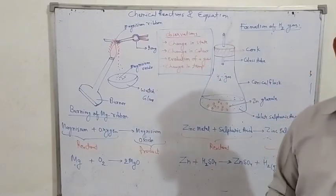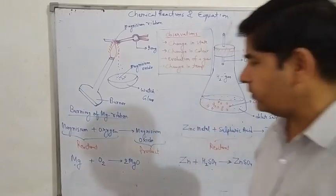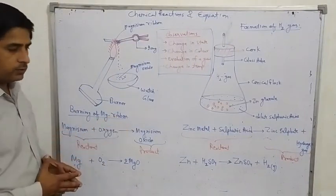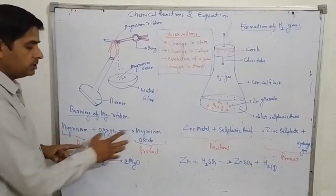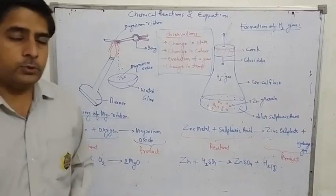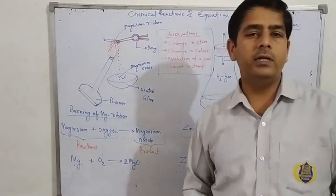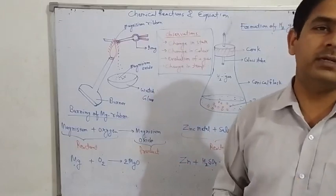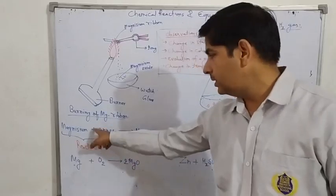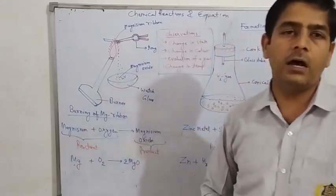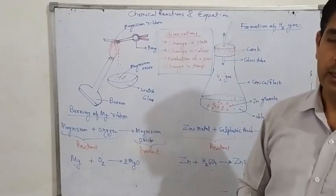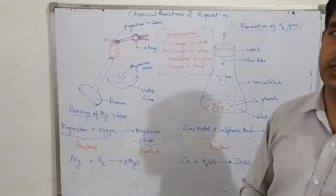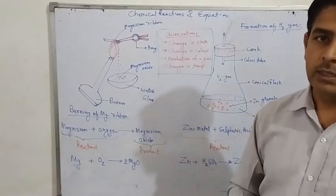The method by which we express a chemical change is called a chemical equation. We can write a chemical equation in two ways. The first method is by using words — for example, magnesium reacting with oxygen gives magnesium oxide. You should remember that the substances on the left-hand side are called reactants, and the substances on the right-hand side are called products. Reactants and products are separated by an arrow.